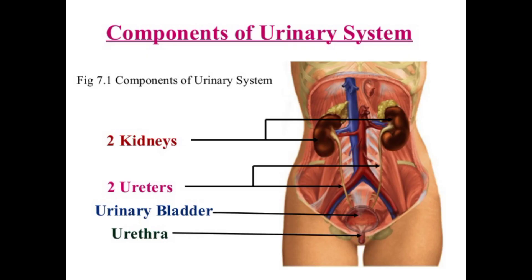Good morning. Today the class is on the urinary system. The urinary system consists of two kidneys, two ureters, one urinary bladder, and urethra. These are the components of the urinary system.